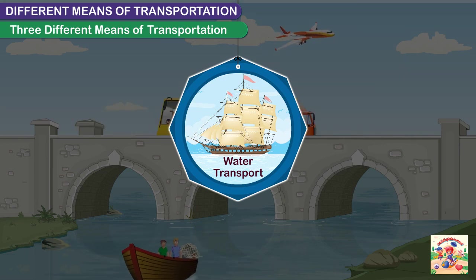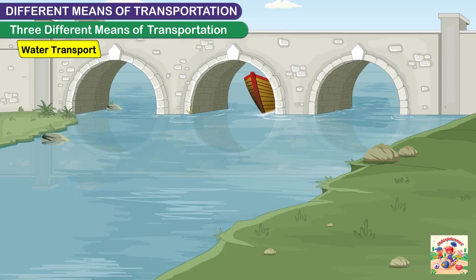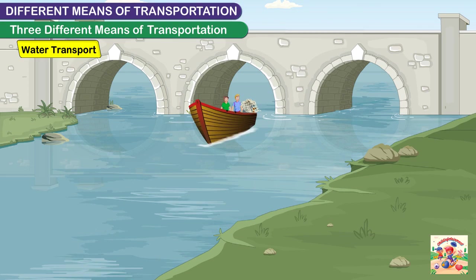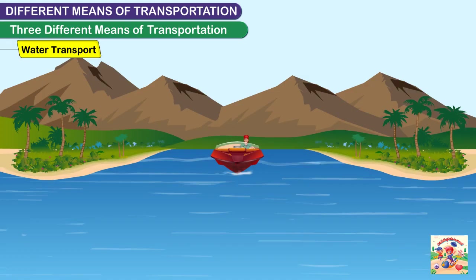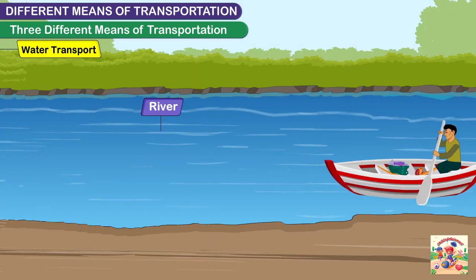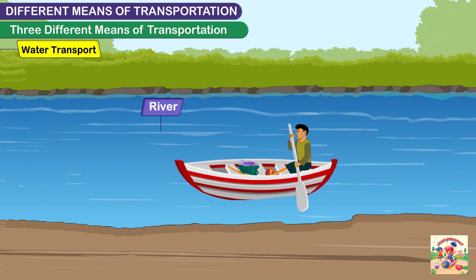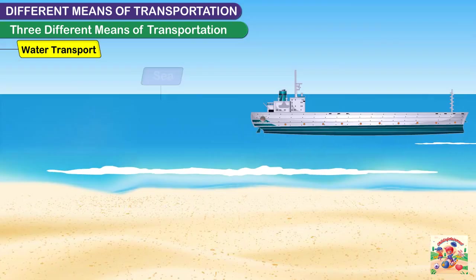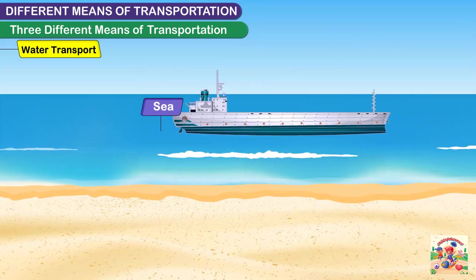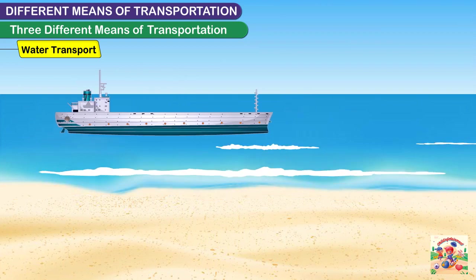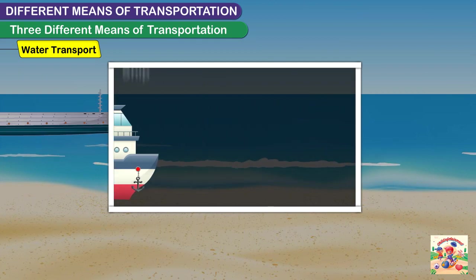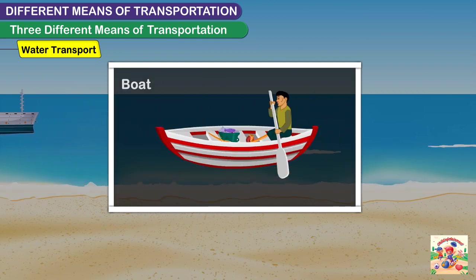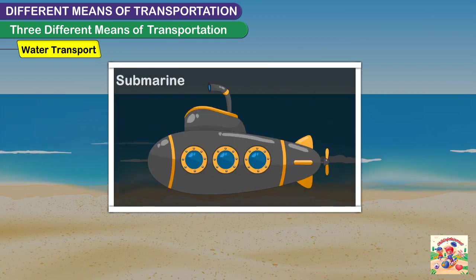Water transport includes all the transport made over a body of water, such as a lake, a river, a sea, etc. For example, ship, boat, submarine, etc.